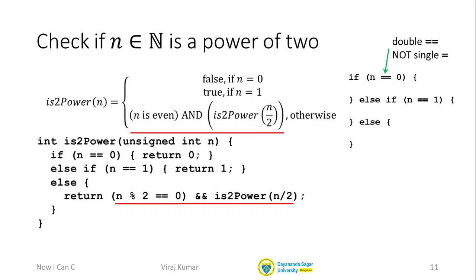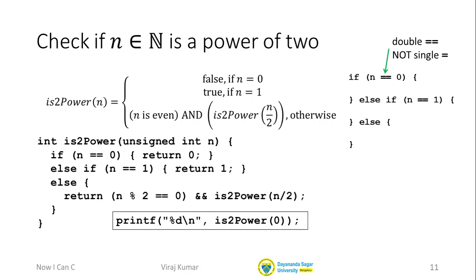I will say a little more about the AND operation on the next slide. Here I want to focus on the recursive call to the is2power function, where we're calling is2power of n over 2. Also, in the main function, we had a series of printf statements printing whether various numbers were powers of 2 — calling is2power with argument 0, then with argument 1, and so on.